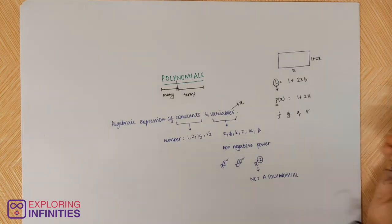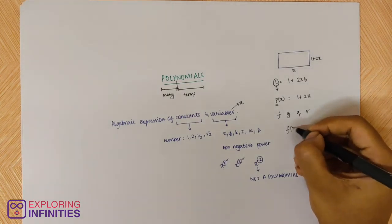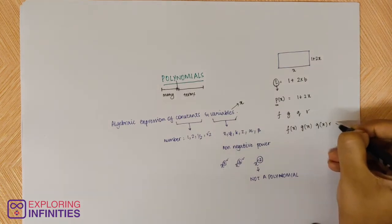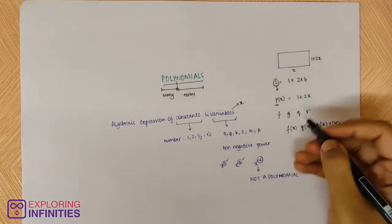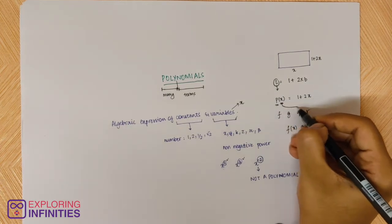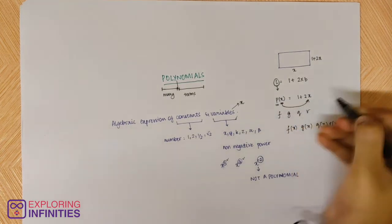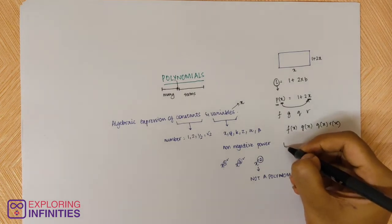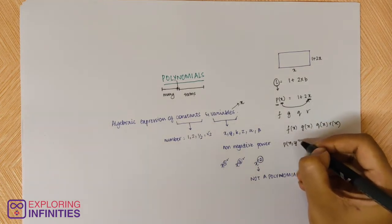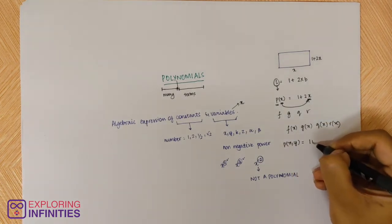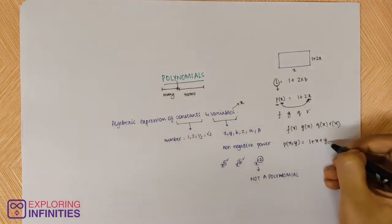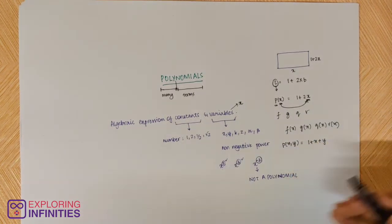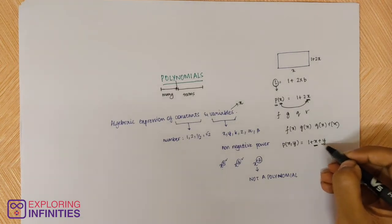It can be f(x), g(x), q(x), or r(x). What does x mean? x is the variable which is there in our expression. If our expression has two variables — for example 1 + x + y — then you can write it as p(x, y), meaning this expression has two variables x and y.